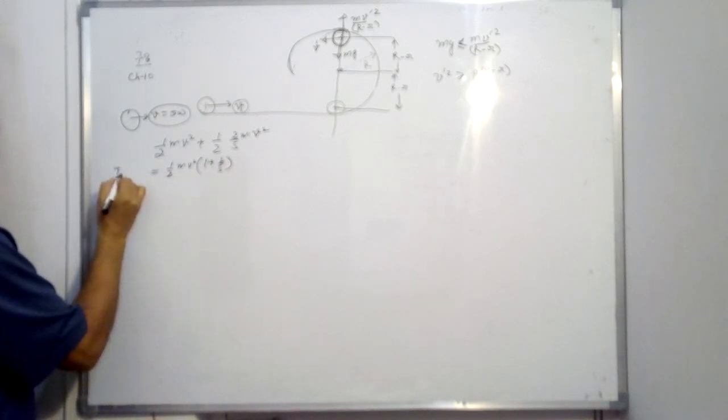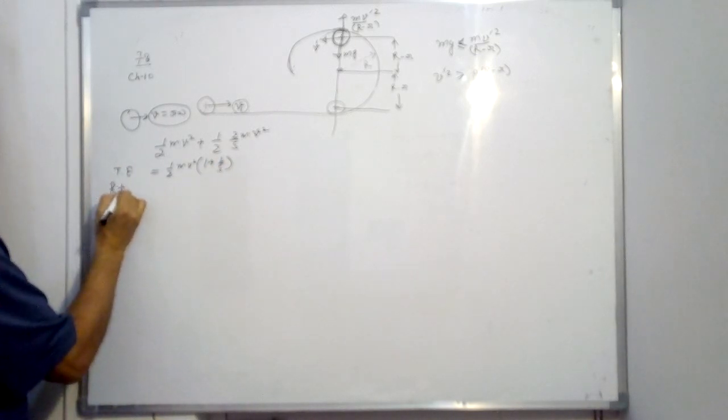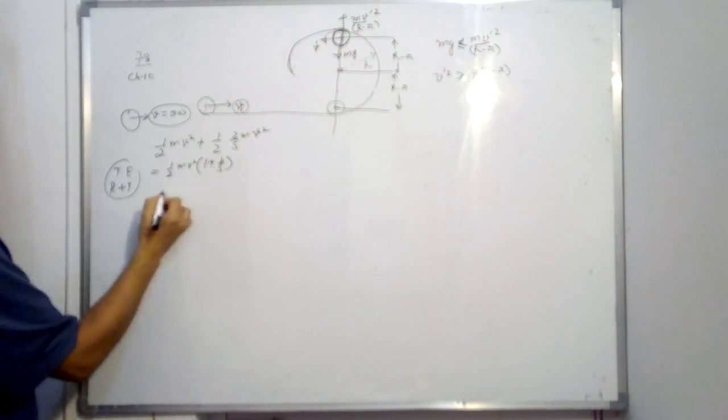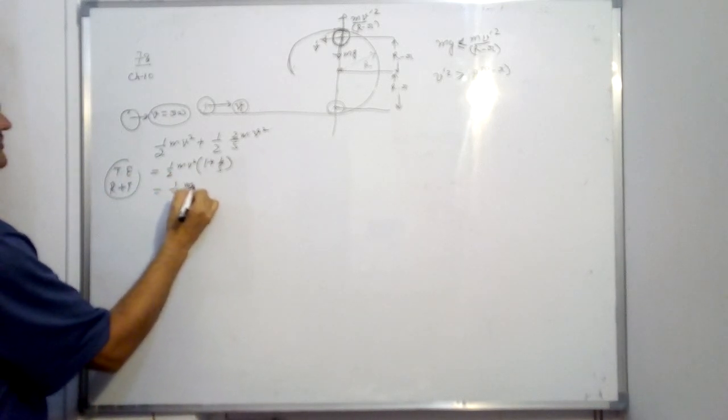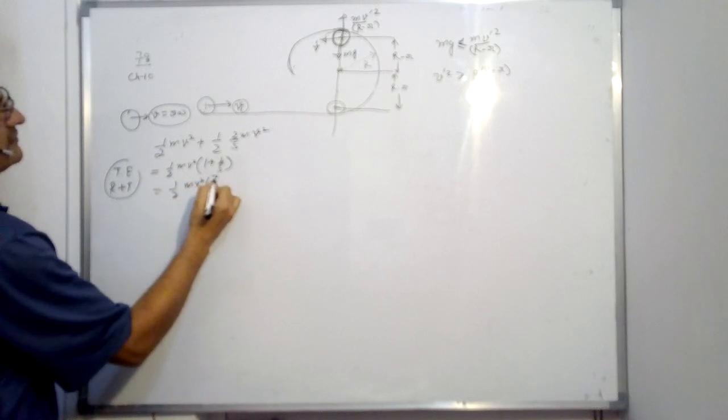if V is the velocity of center of mass, then V would be equal to R omega for pure rolling. So R omega is nothing but V square. So it is nothing but half MV' square 1 plus 2 upon 5. Please note, the total energy rotational plus translational of a sphere is this, which is half MV' square into 7 upon 5.